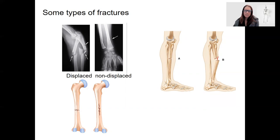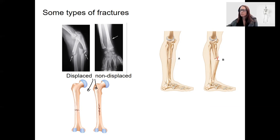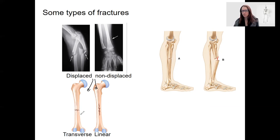Displaced or non-displaced refers to whether the bones are still in alignment or not. There are different severity levels and categories within each. For non-displaced, two different categories are transverse and linear. You could potentially have a transverse displaced fracture as well. This refers to the plane along which the break occurs — a longitudinal plane versus a transverse cross-section break.